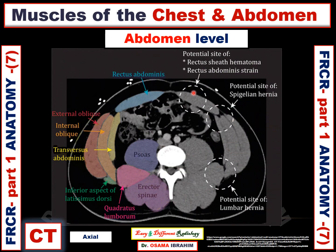Let us see it in the CT examination. This is a CT exam in axial image showing these muscles. This muscle is the rectus abdominis muscle on the left side, and the one labeled in blue is the rectus abdominis muscle on the right side. In between them there is linea alba.